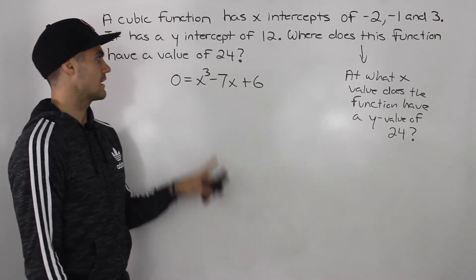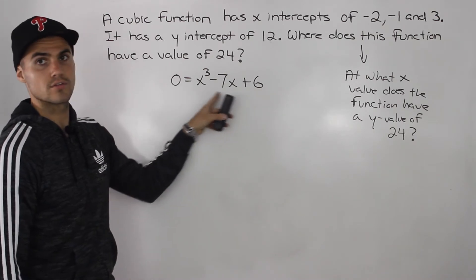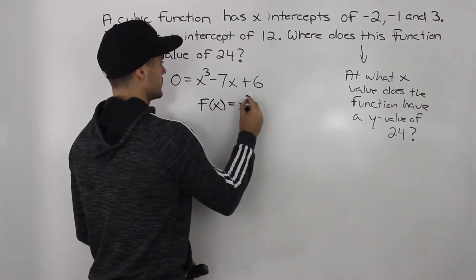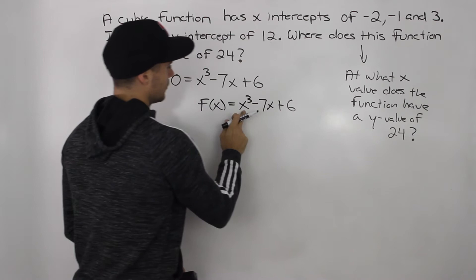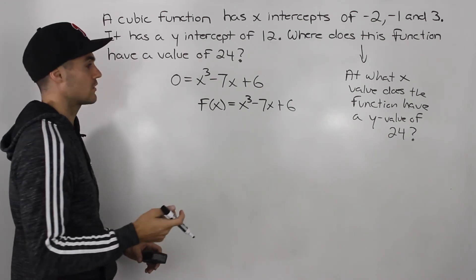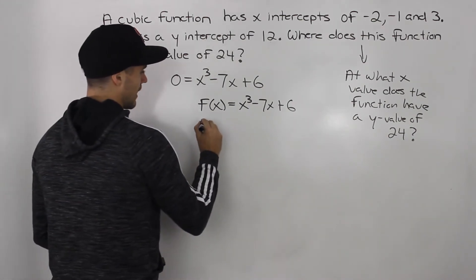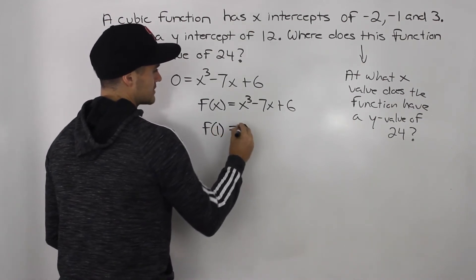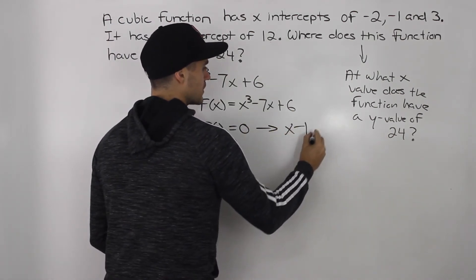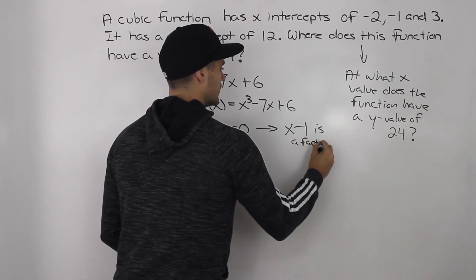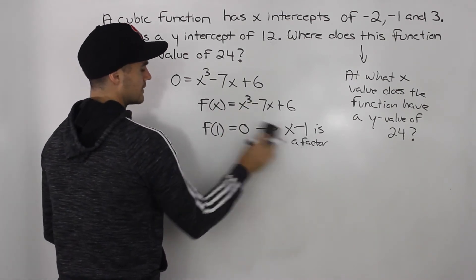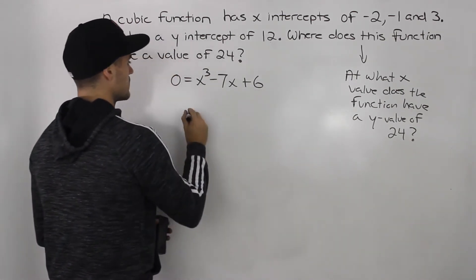Now we just have to solve x³ − 7x + 6 = 0 by factoring. Let f(x) = x³ − 7x + 6. Since this is a cubic, we use the factor theorem to find the first factor. If we plug in f(1): 1 − 7 + 6 = 0. So by the factor theorem, (x − 1) is a factor. Now we divide x³ − 7x + 6 by (x − 1) using polynomial long division.